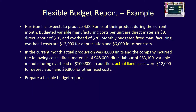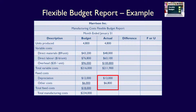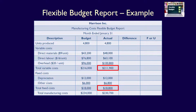Moving on to the actual fixed costs: depreciation of $12,000 and other fixed costs of $6,800, which we place in our actual column, for total fixed costs of $18,800. We can now calculate total actual manufacturing costs: $211,900 total variable costs plus $18,800 total fixed costs equals $230,700 — the total actual manufacturing costs for the month of January.